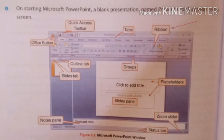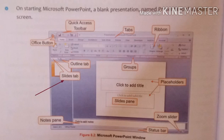Then we have the Outline tab. The Outline tab helps you work with text — when you click on it, you can see all the text across your slides. The Slides tab shows thumbnails of all the slides in your presentation. From the Slides tab you can add, delete, duplicate, and rearrange slides in your presentation.